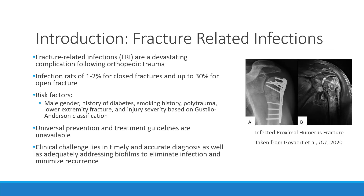Fracture-related infections are a devastating complication following orthopedic trauma, with infection rates of about one to two percent for closed fractures and up to 30% for open fractures. Risk factors include male gender, history of diabetes or smoking, being a polytraumatic patient, having a lower extremity fracture, and having a higher injury severity based on the Gustilo-Anderson classification. Universal prevention and treatment guidelines are unavailable, so FRIs pose a unique diagnostic and clinical challenge.